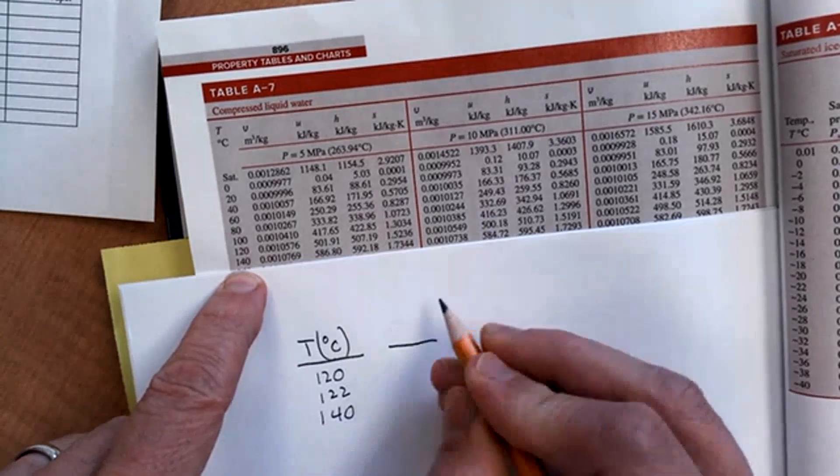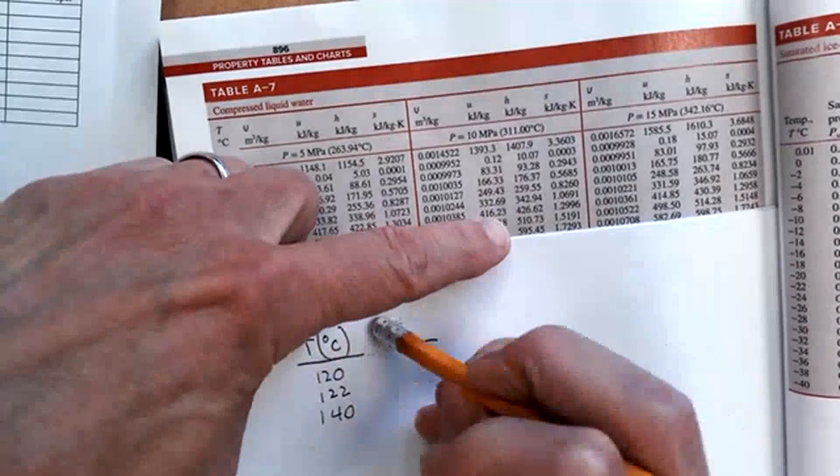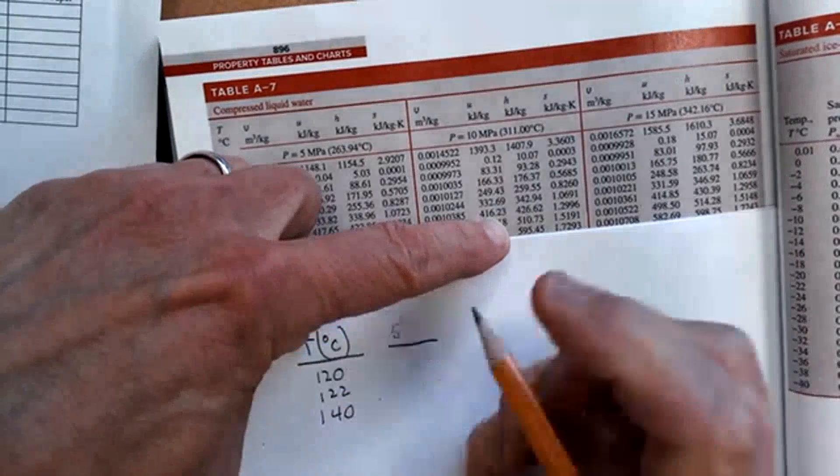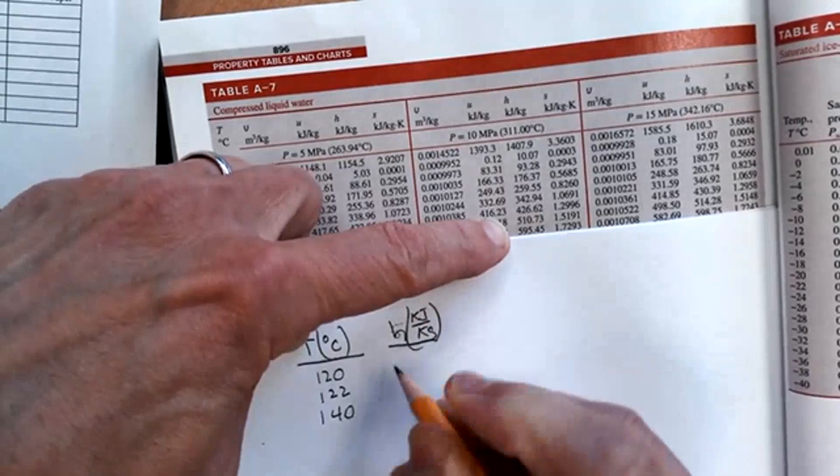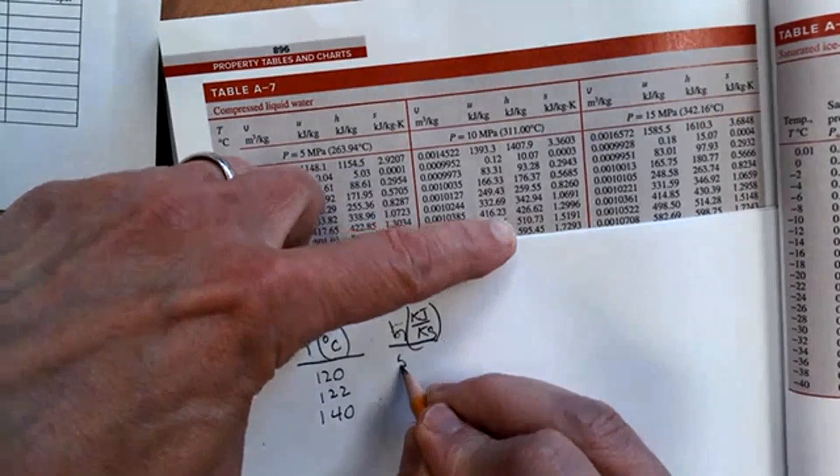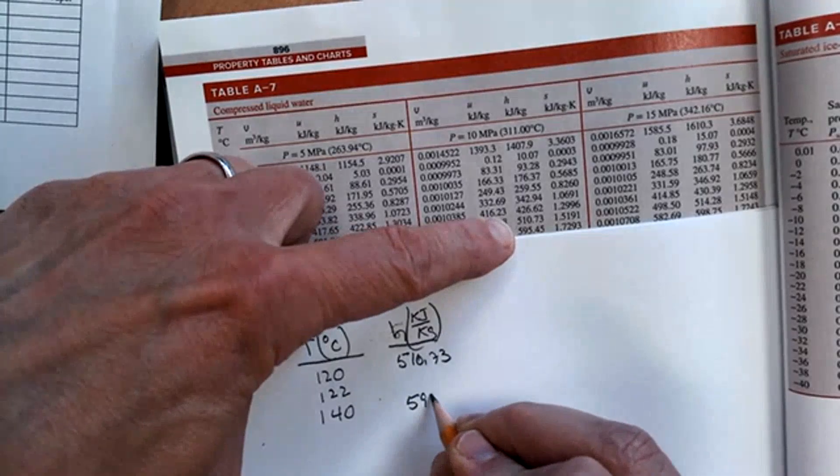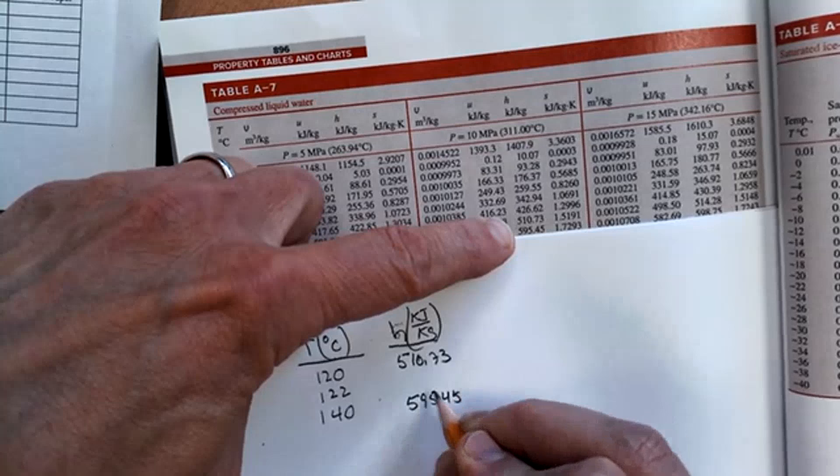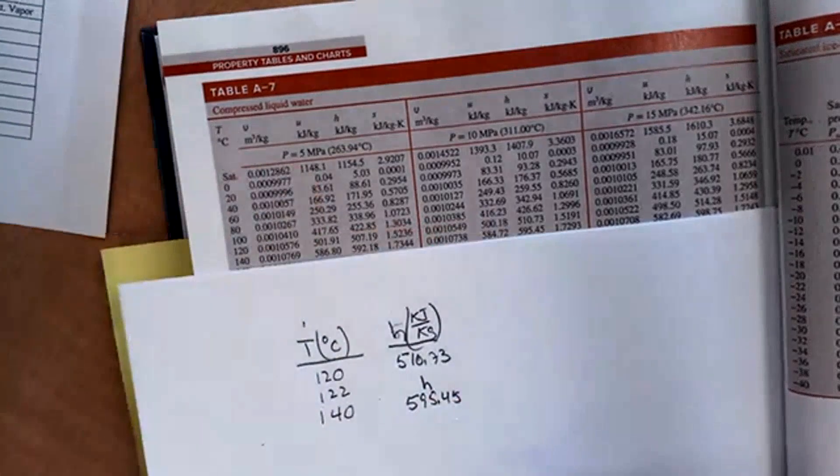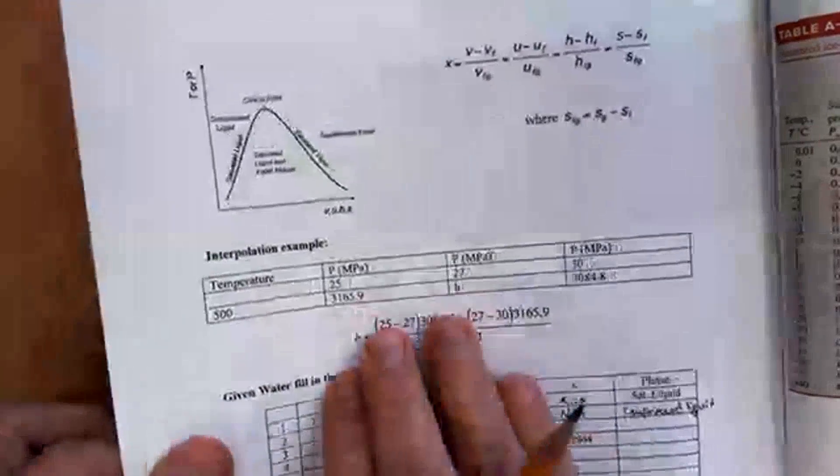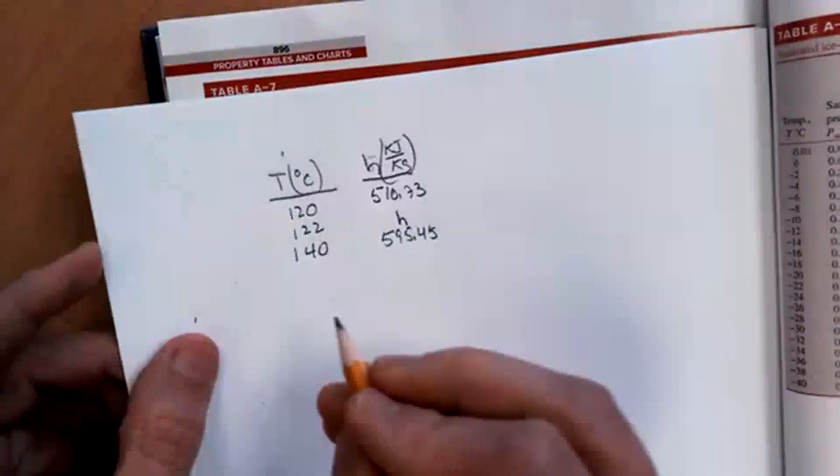Here I've got an H value of, this is supposed to be H here. H at kilojoules per kilogram. That's 510.73 and 595.45. And I want to know what that H value is right there. So I can use this little pattern that I have written out here to solve for this H value.